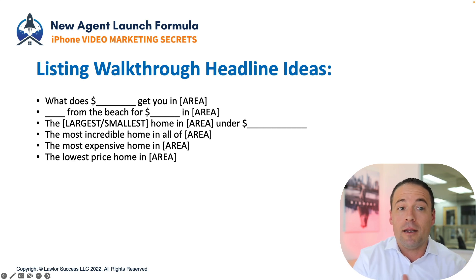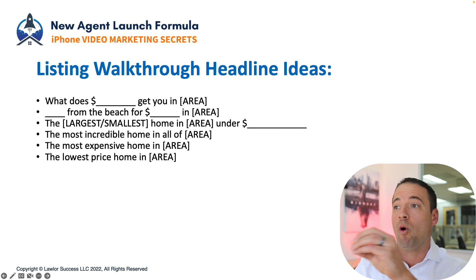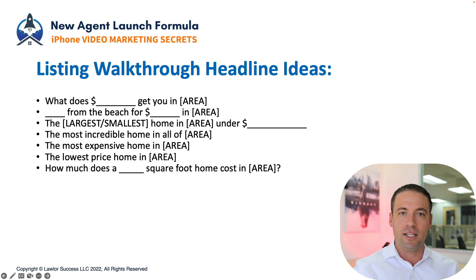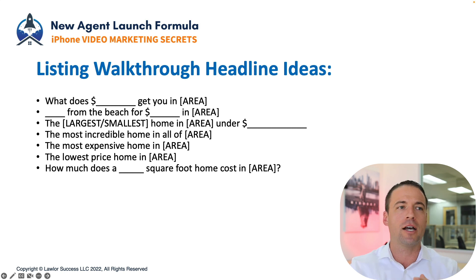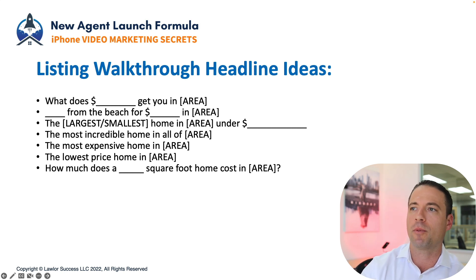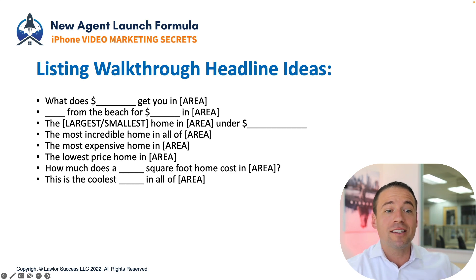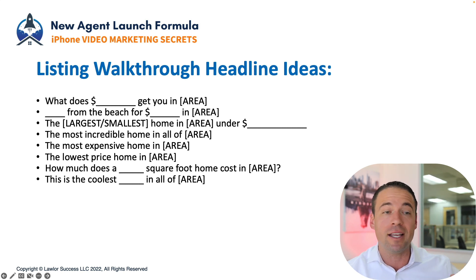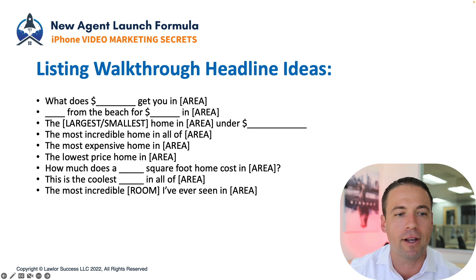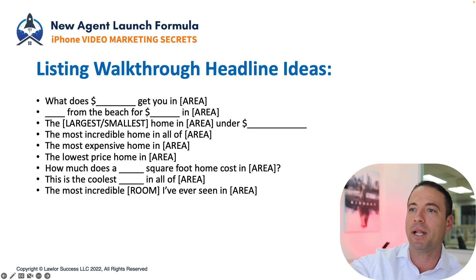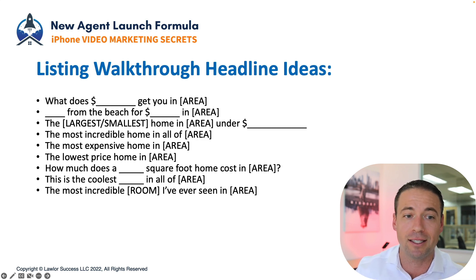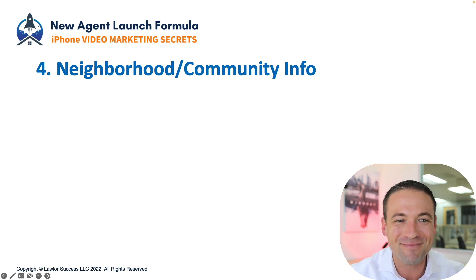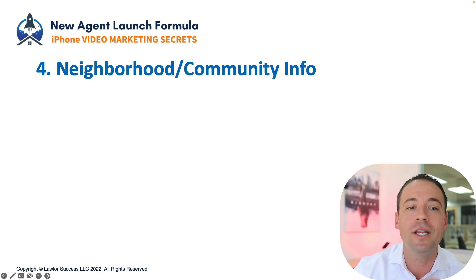'The most incredible home in all of [blank],' 'The most expensive home in all of [blank]' — people love those, they love looking at expensive homes. 'The lowest price home in [blank] area' — it grabs people who want to move into a certain neighborhood. 'How much does a 5,000 square foot home cost in Orange County?' 'This is the coolest backyard in all of Mission Viejo,' 'The most incredible room I've ever seen — I've never seen a master bathroom like this.'